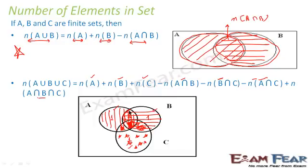So we subtracted the intersection boxes. When we subtracted all three pairwise intersections, the central area that was counted three times became zero because it was subtracted three times — once in each case. So we have to add it back again by saying plus A intersection B intersection C, because that central area is A intersection B intersection C.